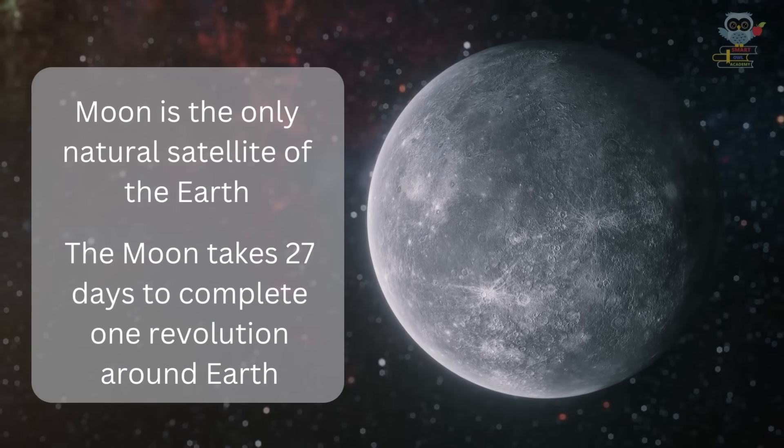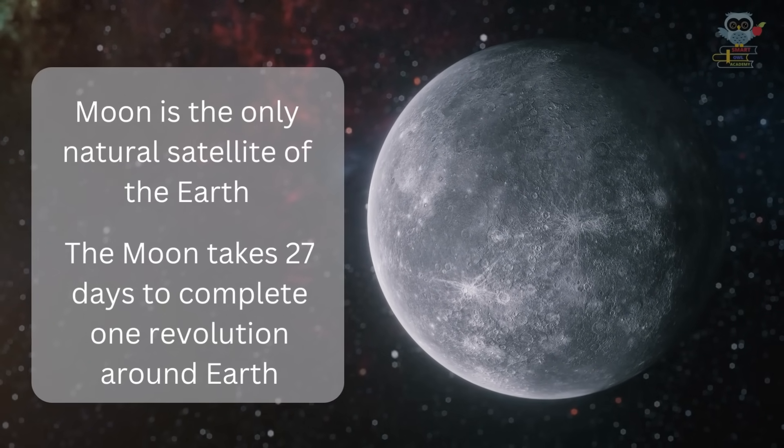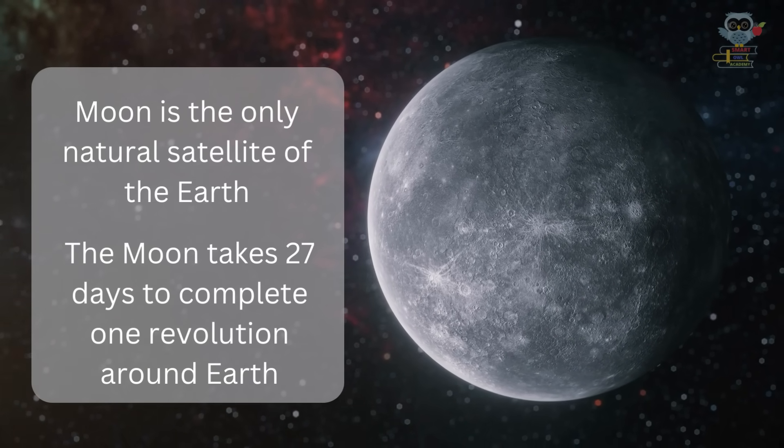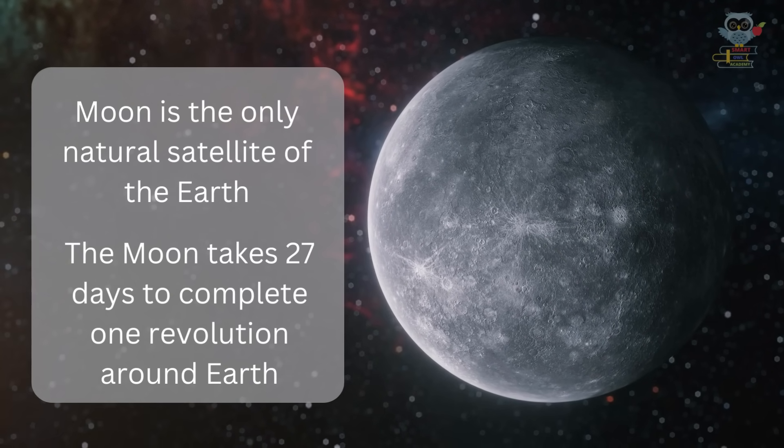Moon is the only natural satellite of the Earth. The Moon takes 27 days to complete one revolution around the Earth.